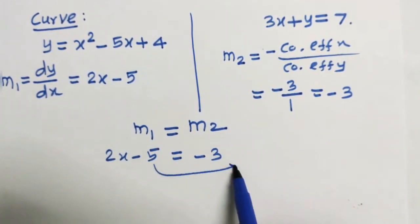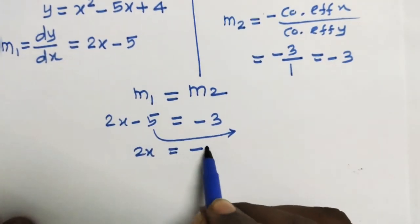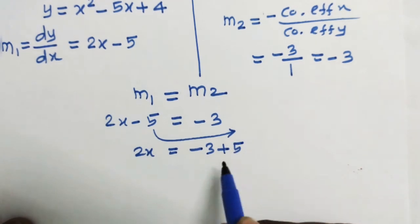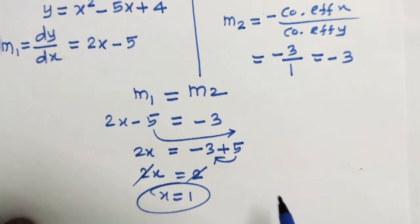And in the minus 5 which means 5 minus 3 is 2, 2x. And 2, 2 getting cancelled x is equal to 1 remaining.